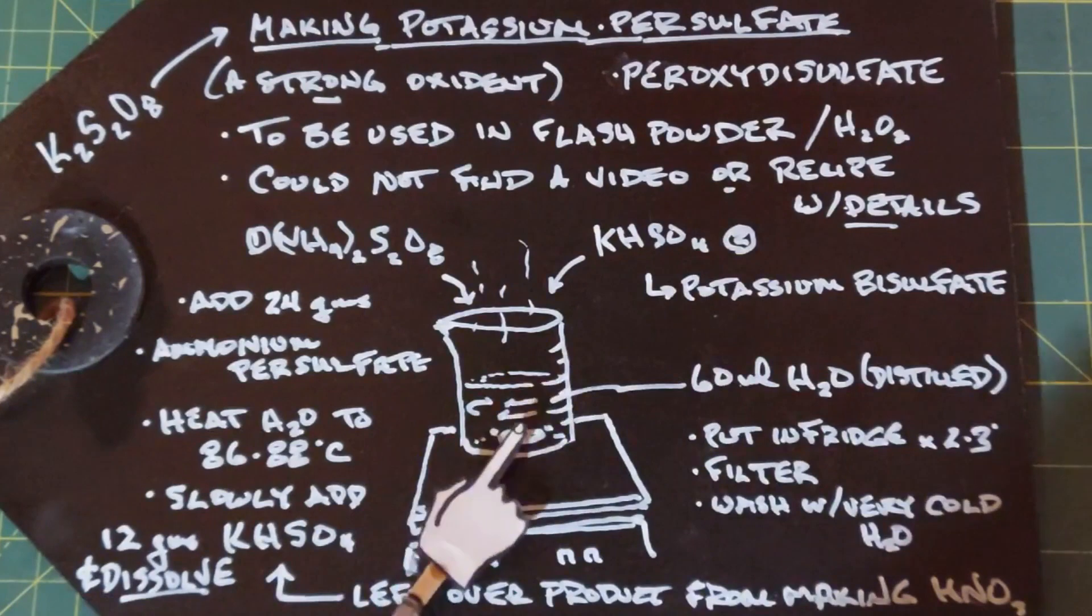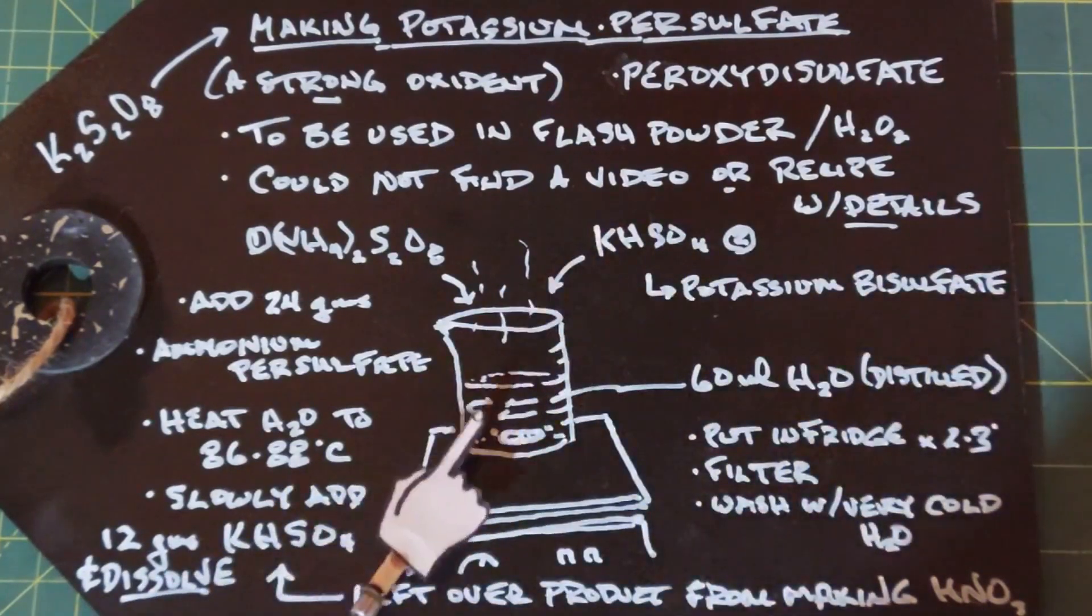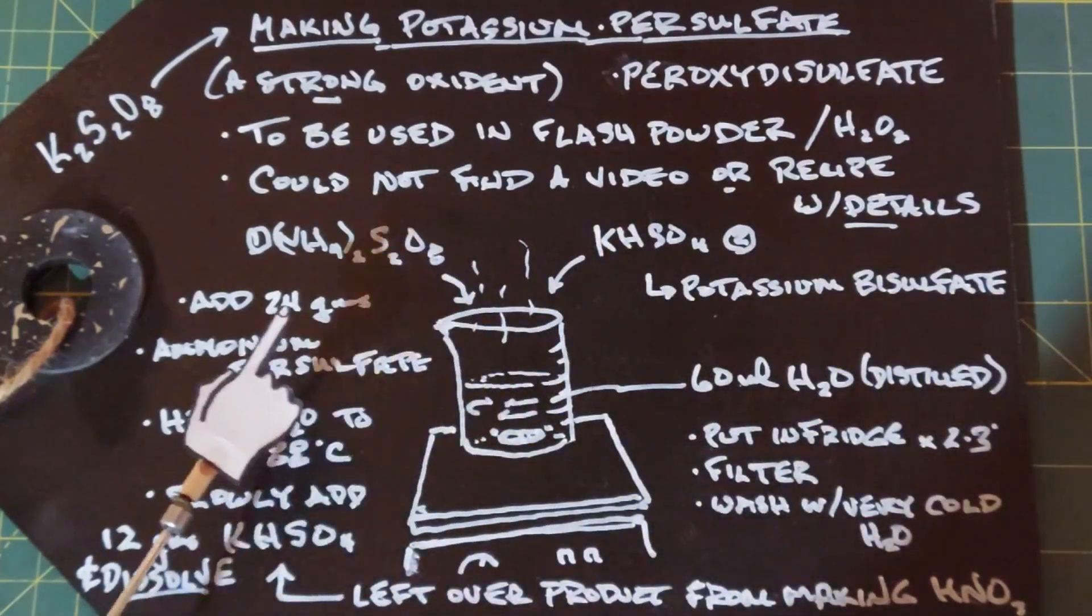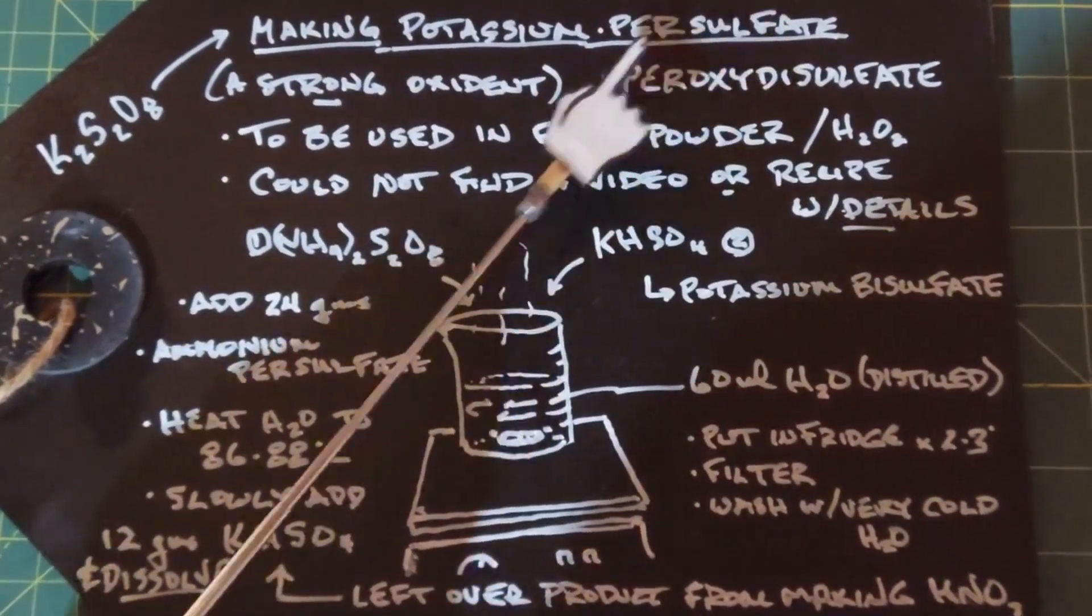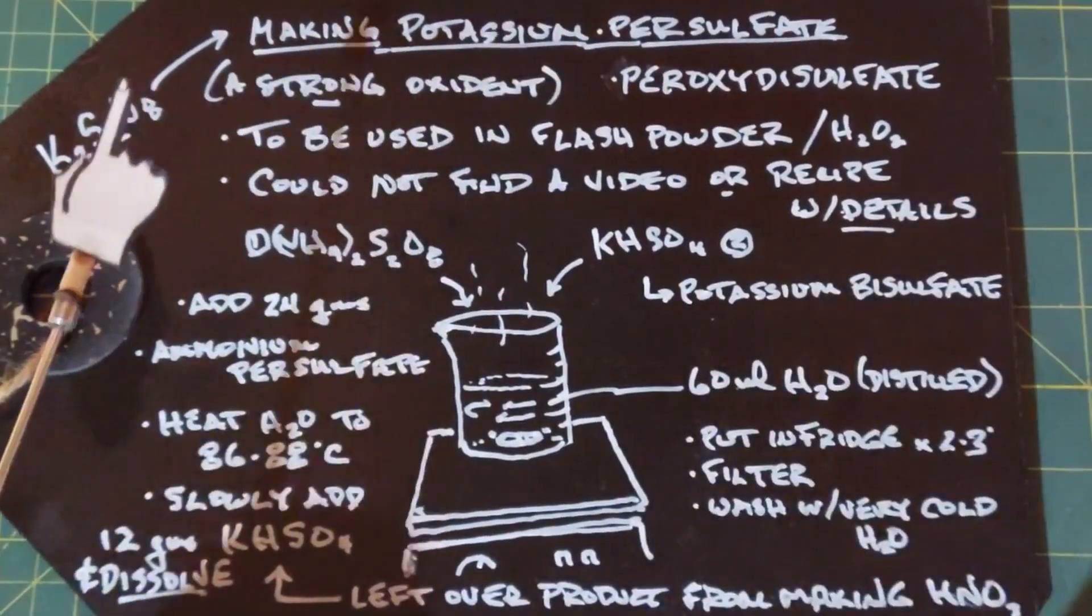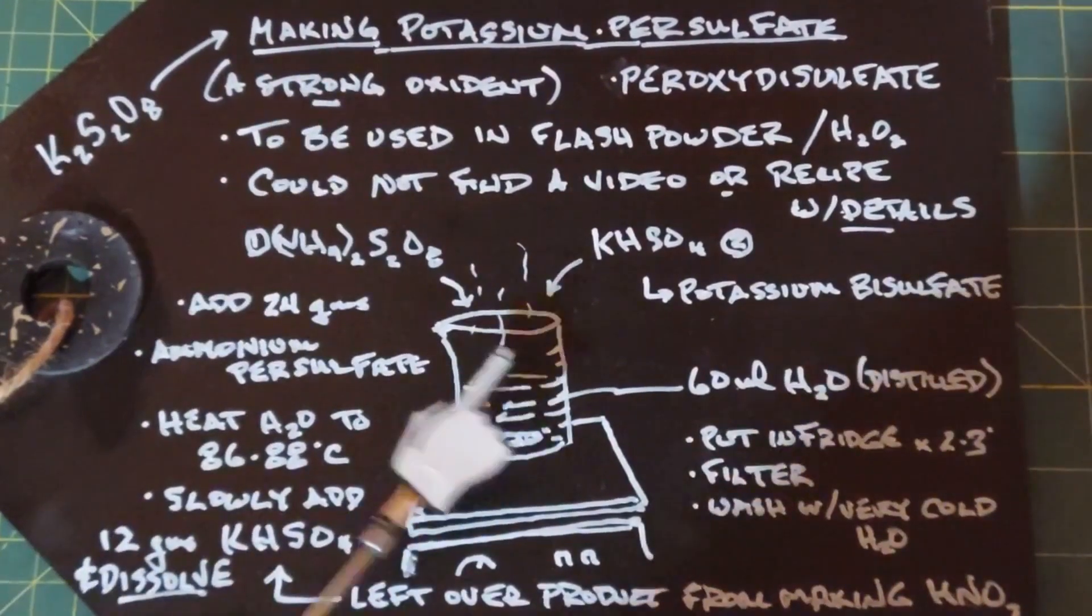It took a while, even with the stir bar, for the potassium bisulfate to completely dissolve. One of the characteristics of potassium bisulfate is that it does not dissolve well in cold water. So this is warm water.